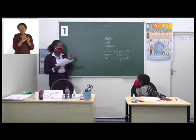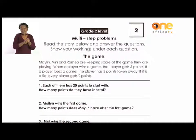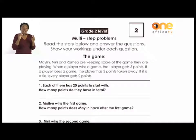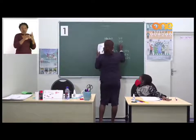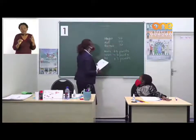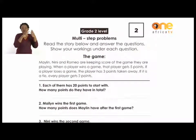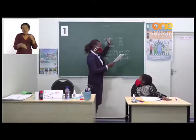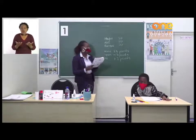Let's now check our questions. We are going to do number one and two. What does number one say? Each of them has 20 points to start with, which means Marilyn 20, Nini 20, Romeo 20. How many points do they have in total? It means 20 plus 20 plus 20.